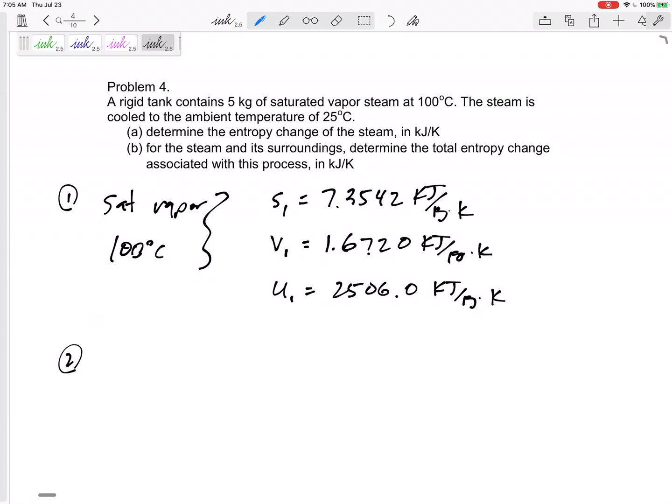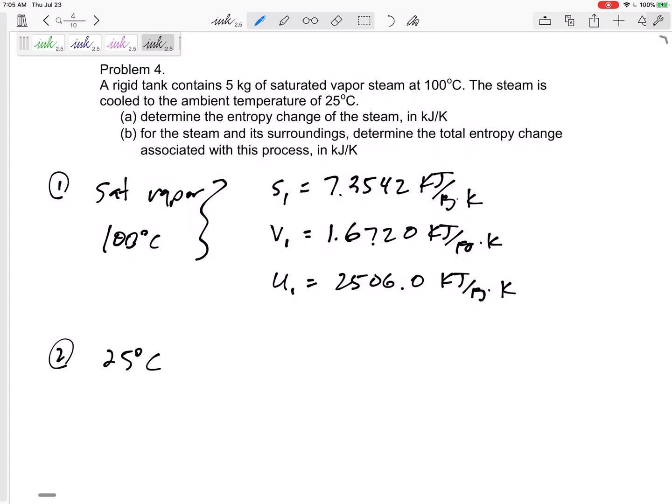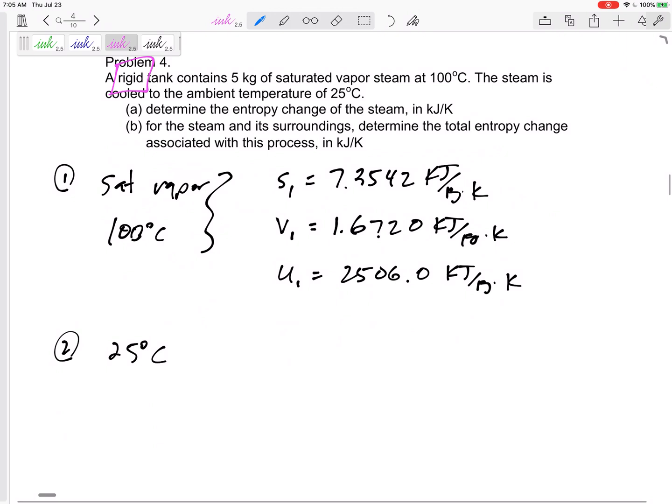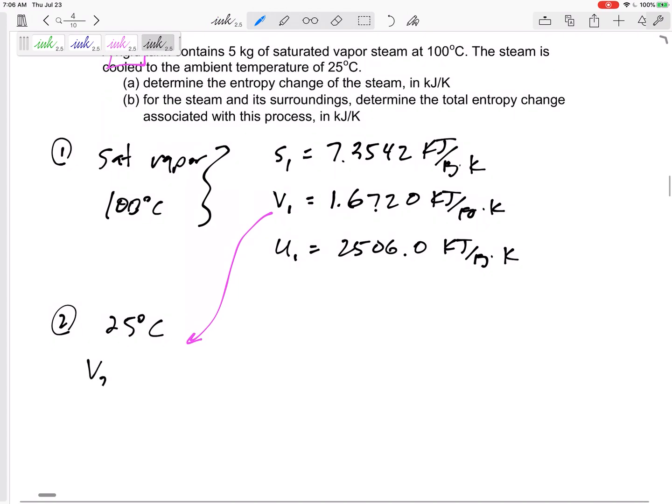Later on, it is cooled to 25 degrees C. Is there anything else that I know about it? Remember going back to chapter 4, closed systems, rigid tanks - this is a closed system. It has the same mass, same volume, same specific volume: 1.6720. So we can't forget all the stuff we did weeks and weeks ago for these processes.